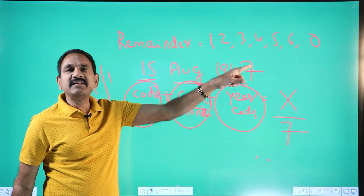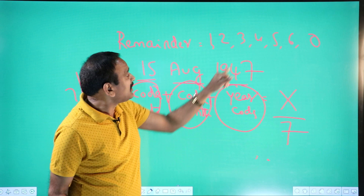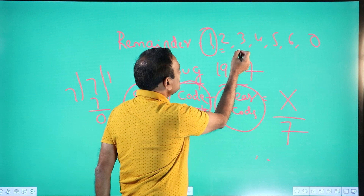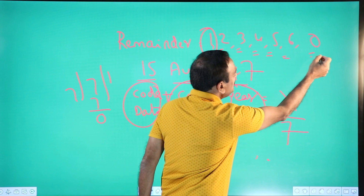Based on the remainder, we are going to tell the day. Remainder 1 means Sunday — because Sunday is day number 1 out of 7 days. 2 means Monday. 3 means Tuesday. 4 means Wednesday. 5 means Thursday. 6 means Friday. And 0 means Saturday. If you get 7, that also means Sunday. So based on the remainder, you tell the day.